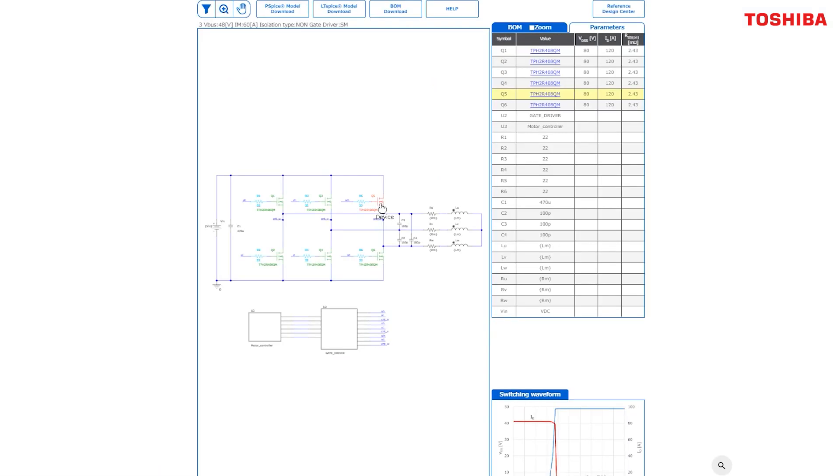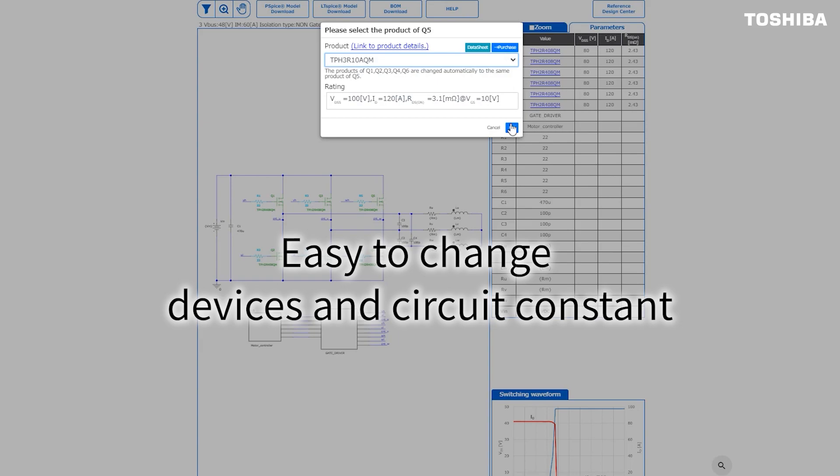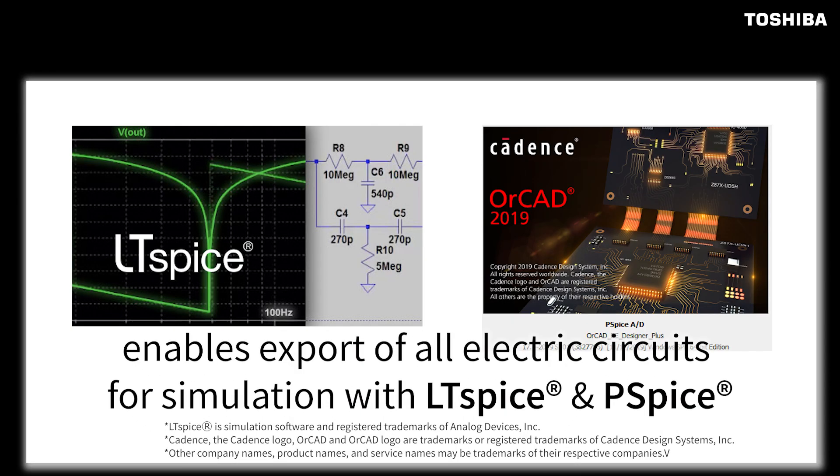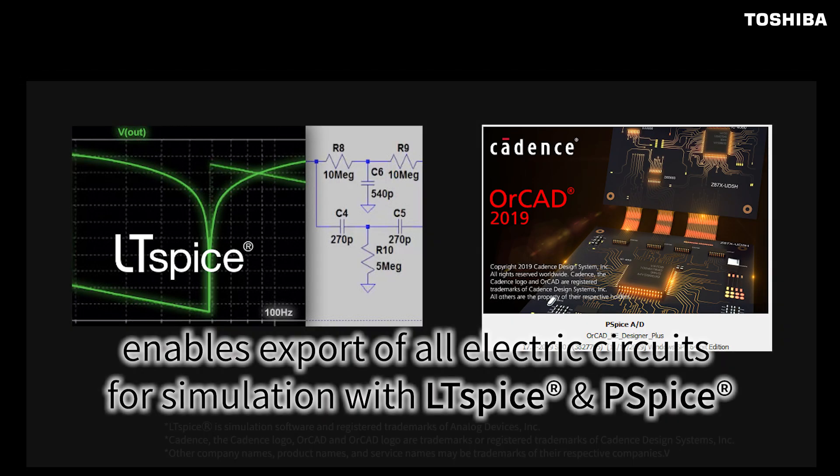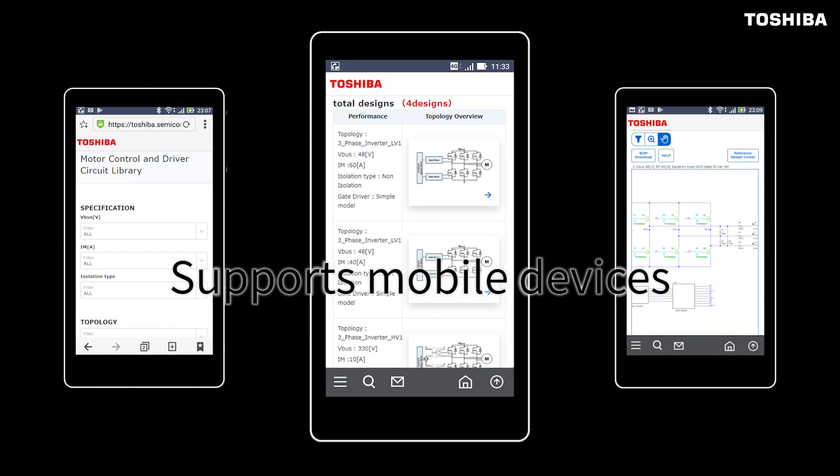Motor Control and Driver Circuit Library allows the change of devices such as power MOSFETs and circuit constants, enables export of all electric circuits for simulation with LTSPICE and PSPICE, and supports mobile devices with limited functions.